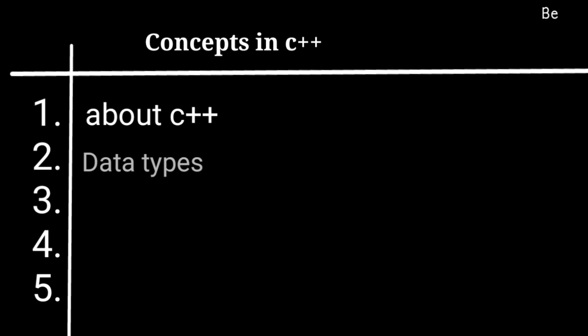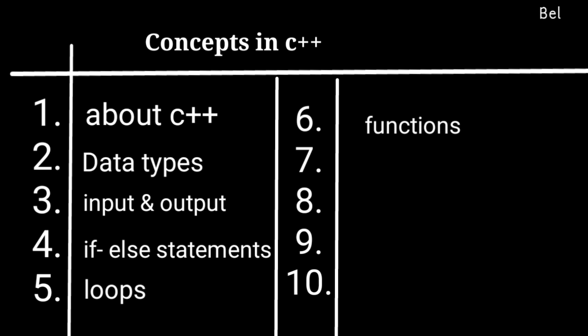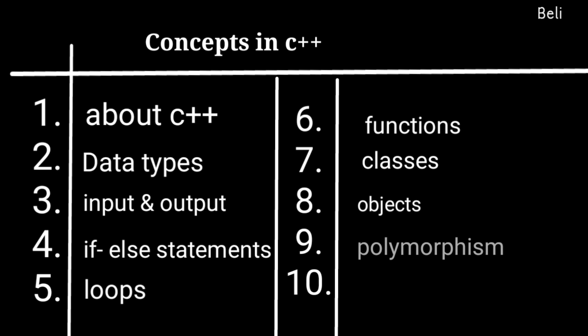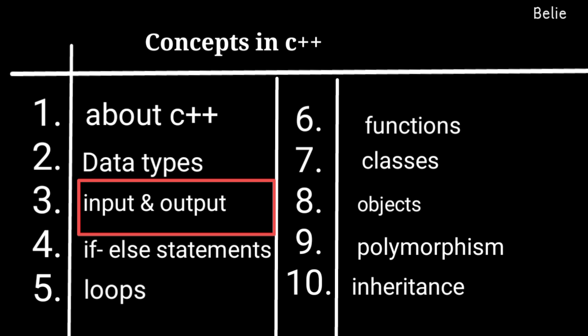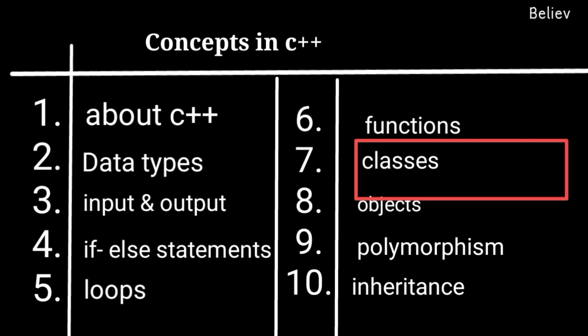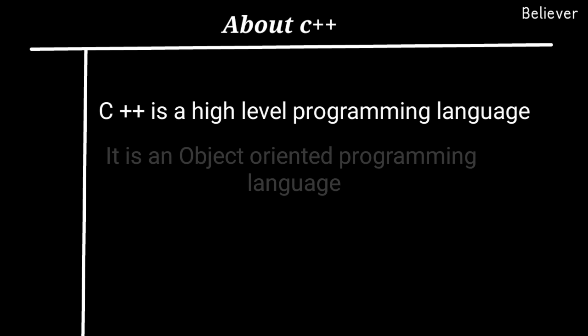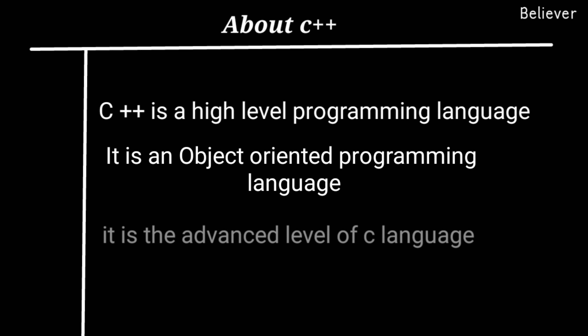Hi, hello. In this video you are going to learn C++ programming language. Let me give an overview of the concepts that exist in C++. The concepts in C++ are about data types, input and output, if-else statements, loops, functions, classes, objects, polymorphism, and inheritance.